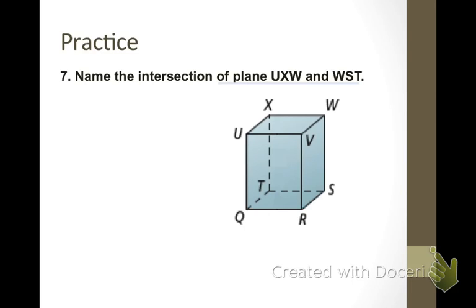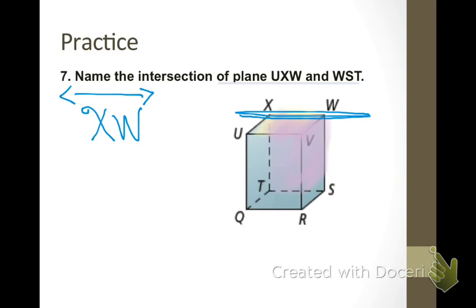Now I need you to name the intersection of plane UXW and WST. It's important to know that even though this is a box, if these were actual planes, they would extend on forever. So, they are just intersecting to make this box. The plane of UXW is the top of the box. And plane WST is the back of the box. So, where the back of the box and the top of the box intersect is this line right here, which is line XW. And, of course, it is a line because when two planes intersect, it becomes a line. The intersection is a line.